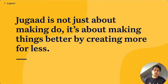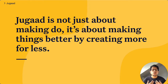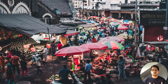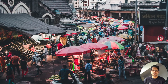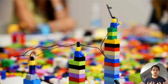At its core, Jugaad is a flexible approach to problem solving that uses limited resources in an innovative and creative way. Jugaad is not just about making do, it's about making things better by creating more for less. Growing up in India, Jugaad was a way of life. From using kites made out of old magazines, broomsticks and cooked rice, or making balls out of paper, polythene bags and rubber bands to play a variation of dodgeball, you could find Jugaad everywhere. Personally, I've always found Jugaad to be both a great creative outlet and also a creative exercise in problem solving.